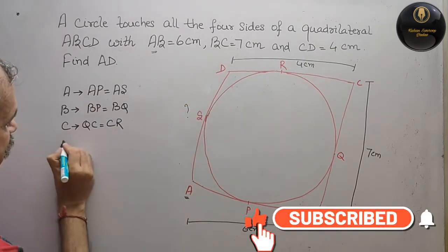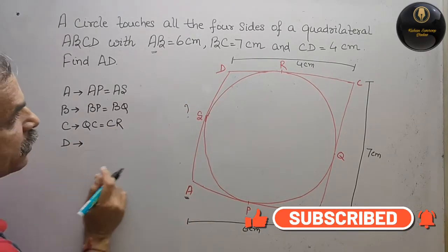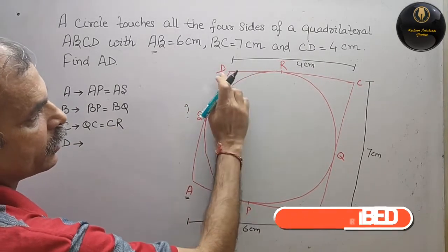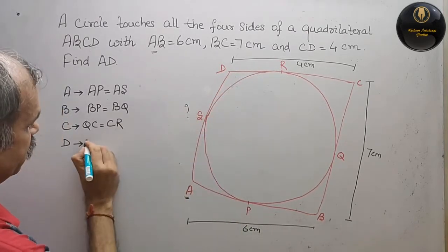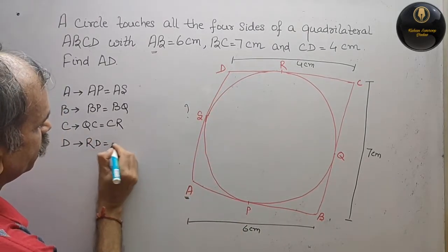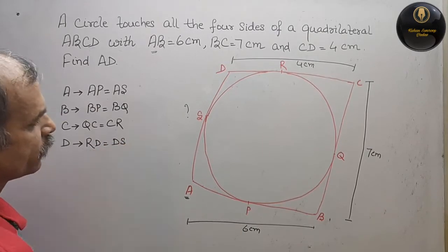If D is the external point, what you will get? RD is equal to DS. RD is equal to DS.